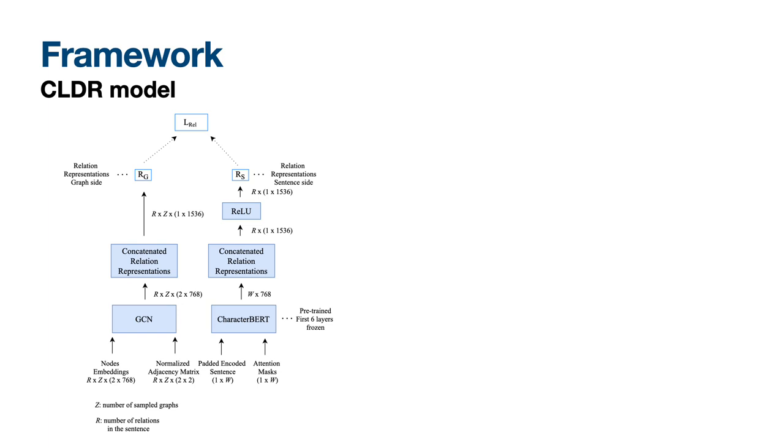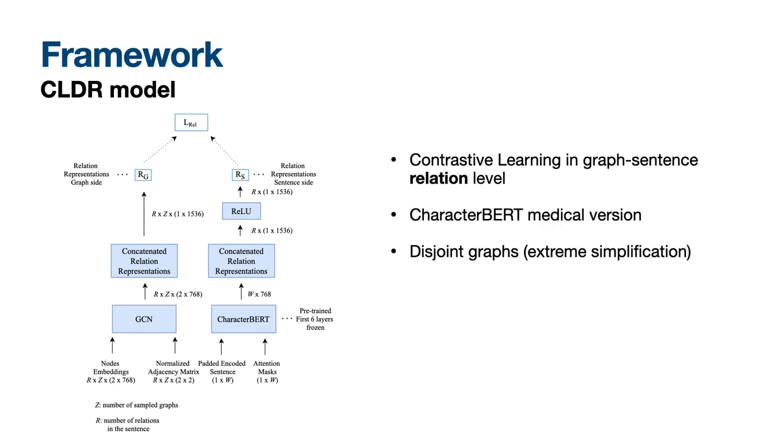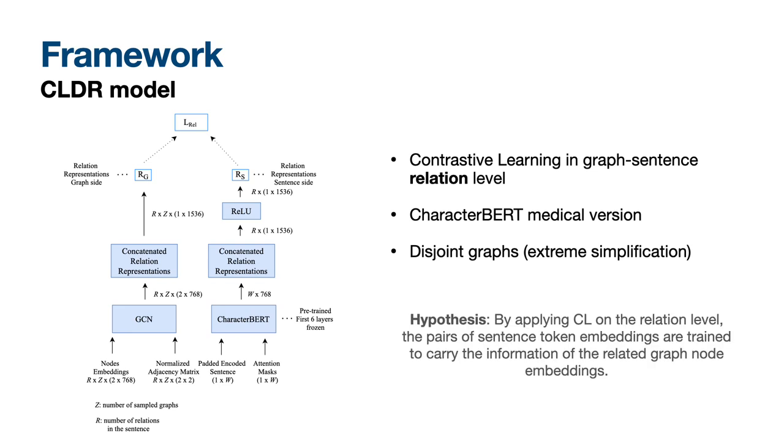In the CLDR model, we want to decrease the level of abstraction, and apply contrastive learning in the relation level. Hence, we pass the sentence through CharacterBERT, and create the correct relation representations. On the other side, we pass the positive and negative graphs, to create positive and negative relation representations. In this setup, as we work in the relation level, we use disjoint graphs, which is an extreme simplification of the subgraph. Finally, we apply contrastive learning in the relation level, and we hypothesize that the pairs of sentence token embeddings are trained to carry the information of the related graph node embeddings.